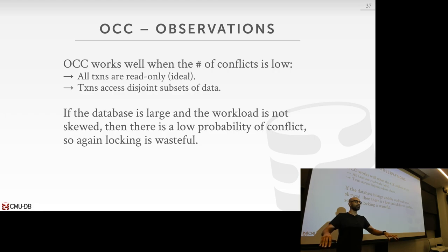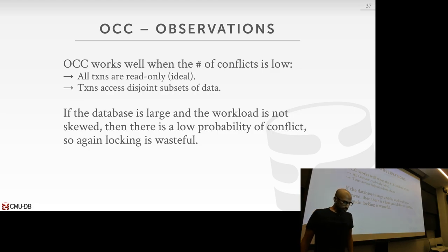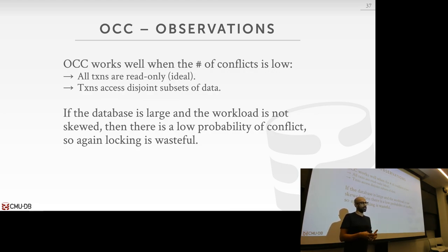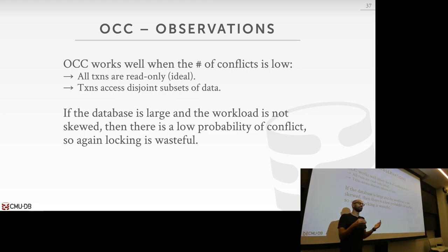In highly contentious workloads, transactions consistently restart: they do a lot of work in the work phase assuming no contention, but only at the very end discover all that work is wasted. Research shows that in contentious workloads, both two-phase locking and OCC generally don't work well — in 2PL, you have contention on hot locks; in OCC, transactions do wasteful work and abort at the end. For low-contention workloads, OCC wins because there are no lock acquisition costs, even when transactions would logically never conflict.